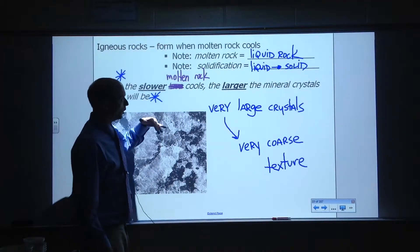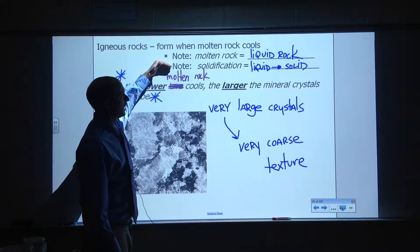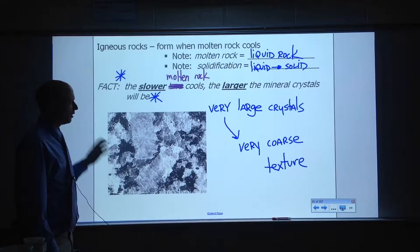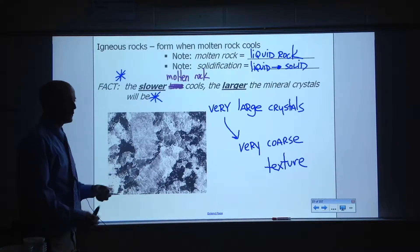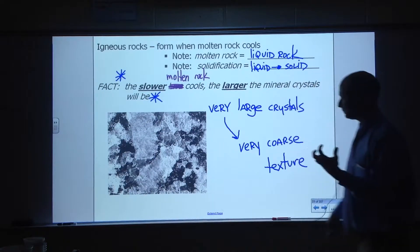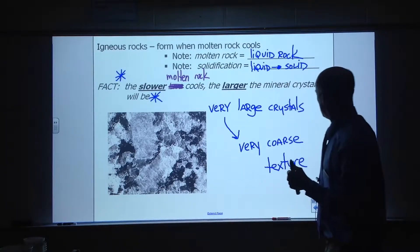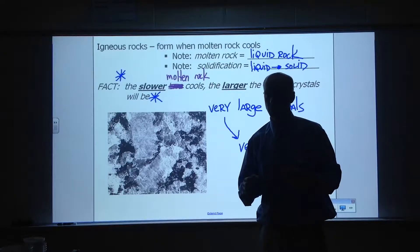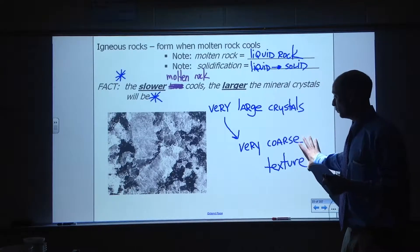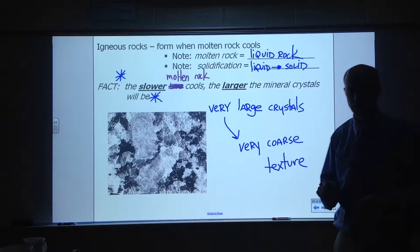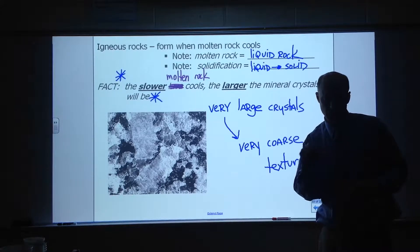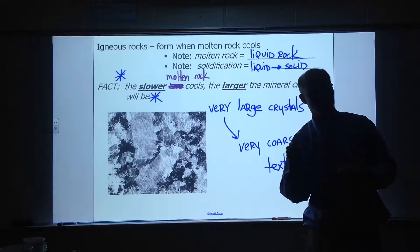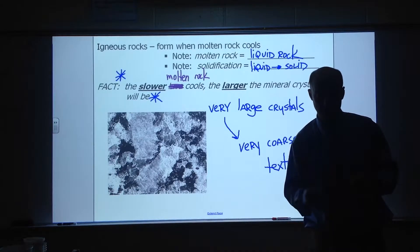Igneous rocks form when molten rock cools and solidifies. Molten rock is liquid rock; solidification is the process of liquid turning to solid. The slower that molten rock cools, the larger the mineral crystals will be — the more time it takes, the larger the crystals. In this picture, these minerals are very large crystals for an igneous rock. The texture when crystals are large is called coarse. When the pieces are really small — oftentimes you can't see them with the naked eye — we say the texture is fine.